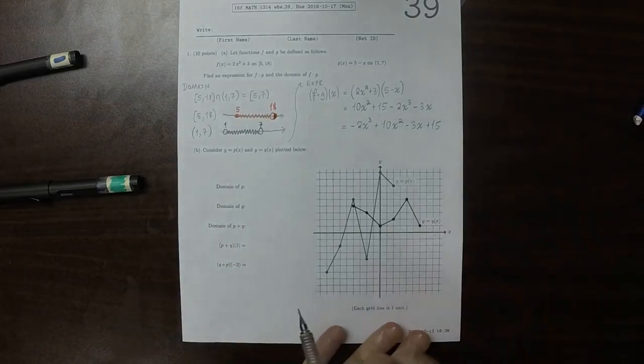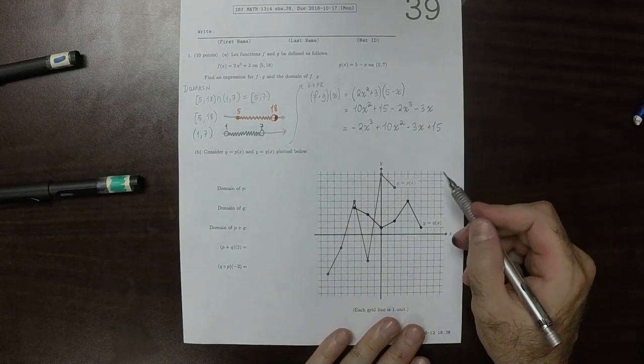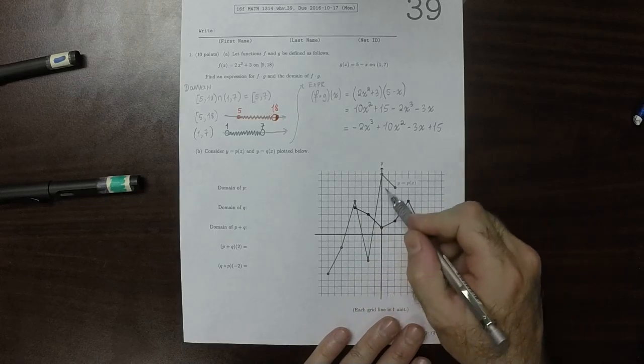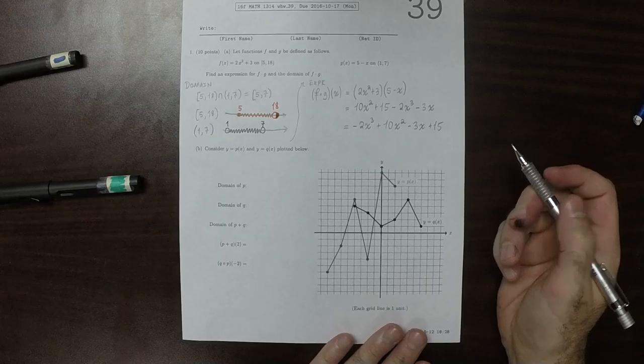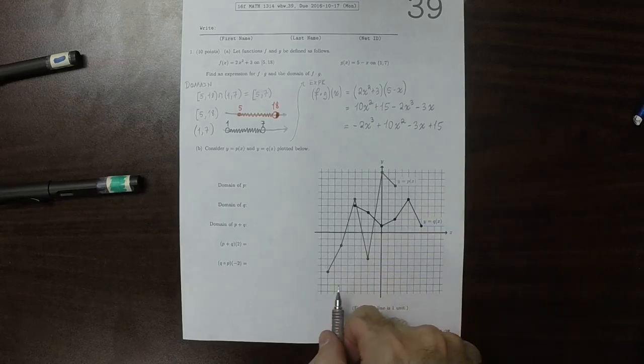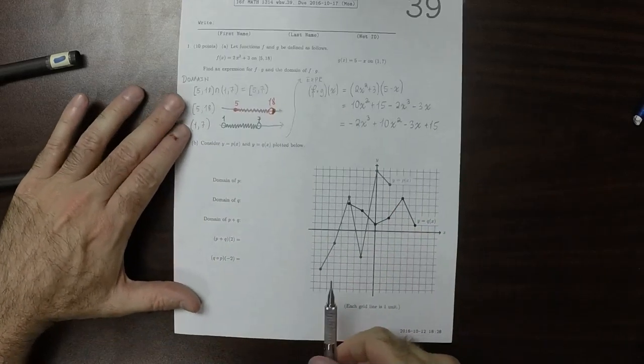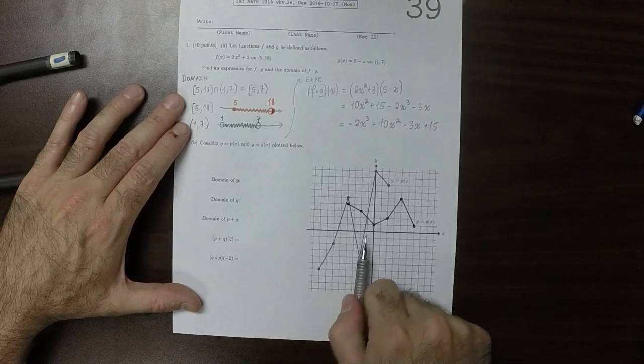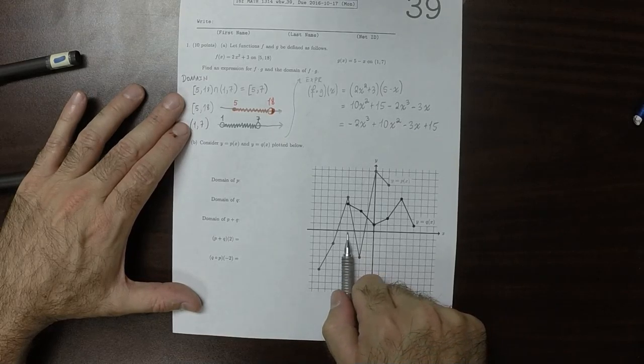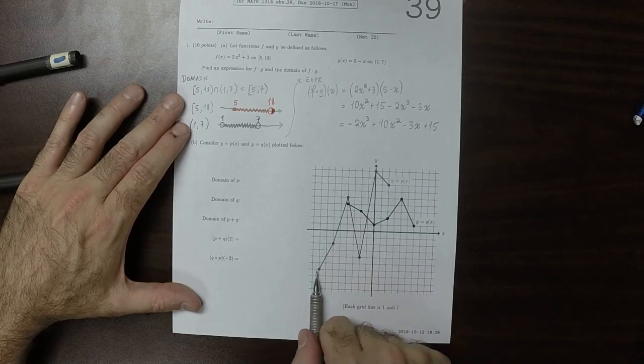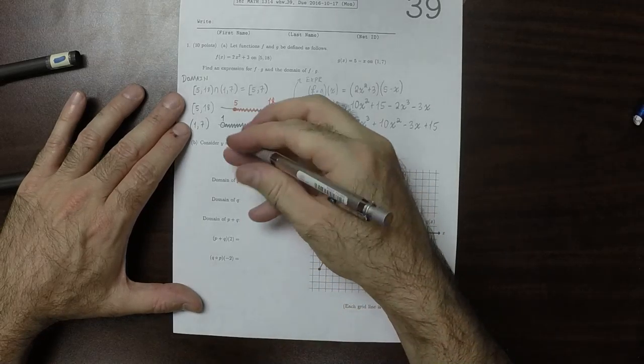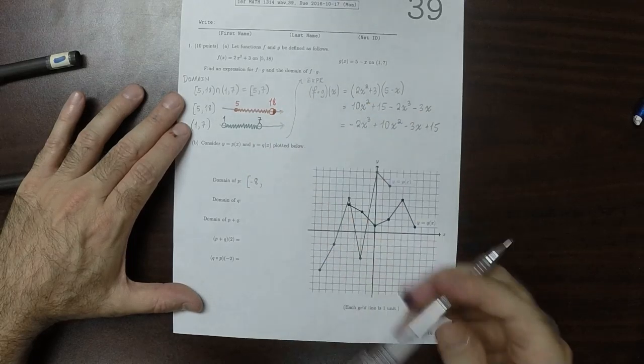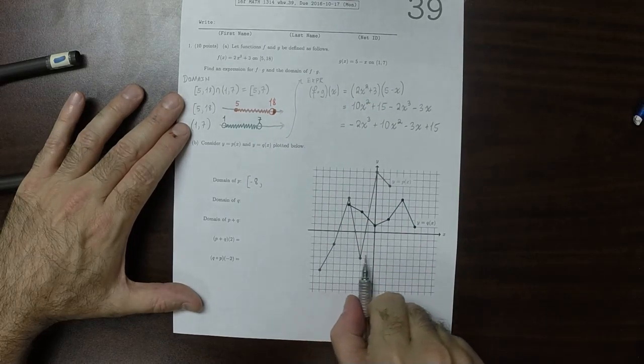Okay, so now the domain of p. So p is the gray one, the lighter colored one. So we want to know everywhere that we have a gray point. So the gray points start back here at x is negative 2, 4, 6, 8 at negative 8, and they proceed all the way until 2.